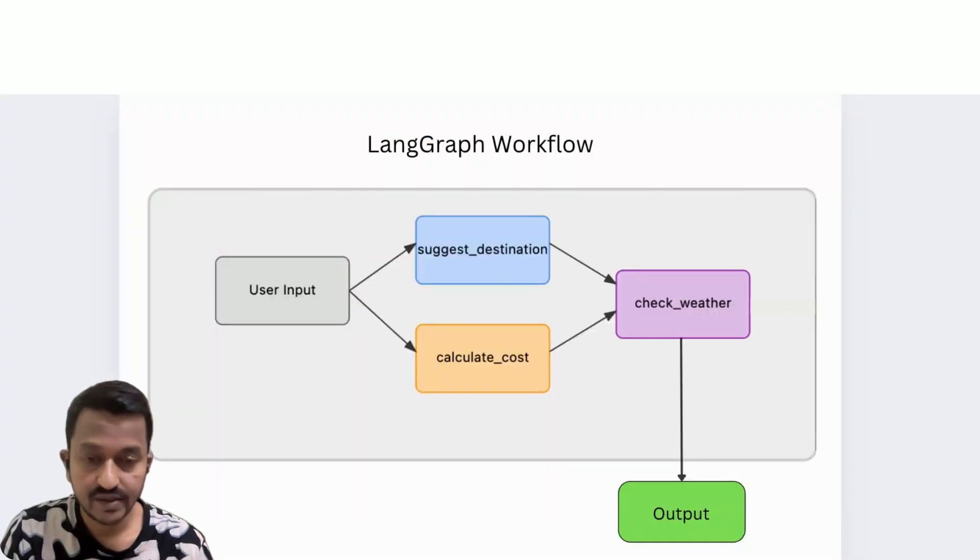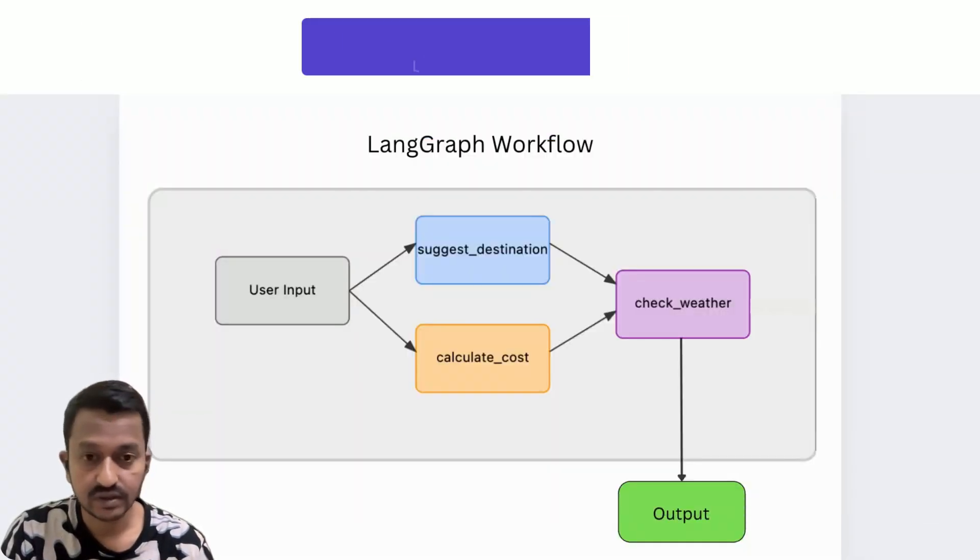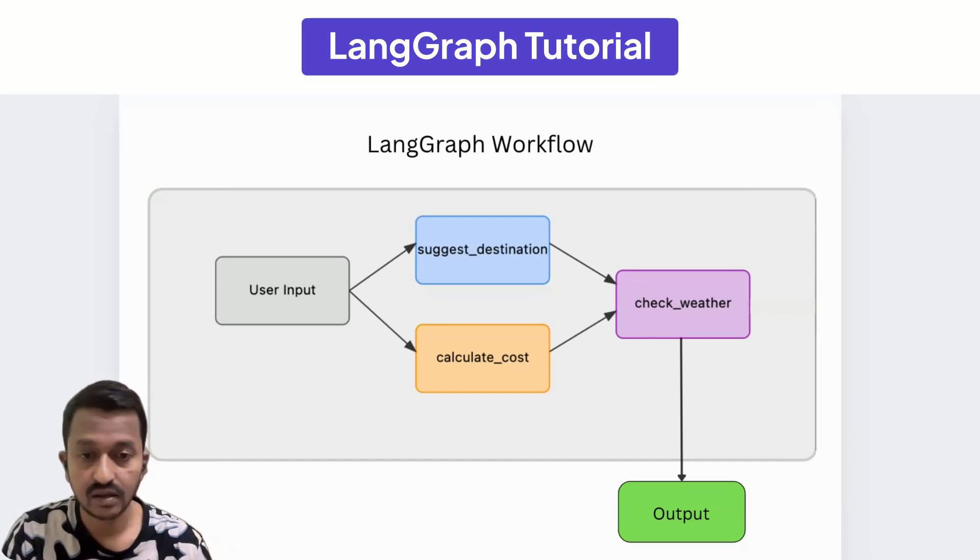As you can see, here is the LangGraph workflow for a simple holiday planner scenario. The user wants to go to a destination, wants to know the weather, and has a limited budget.